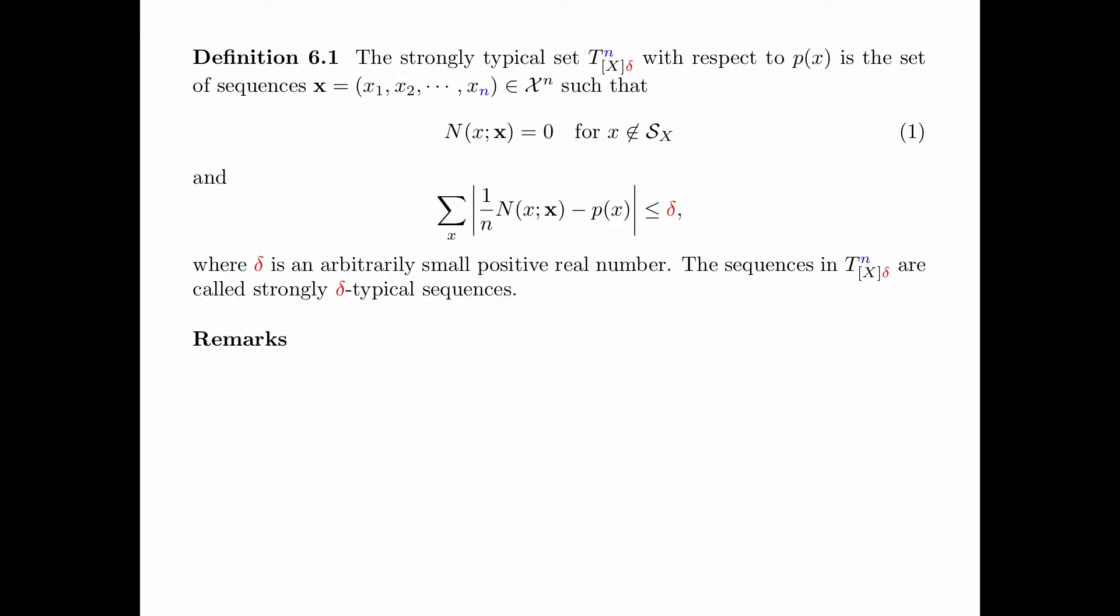In the strongly typical set to be defined, there are two parameters: N, a positive integer, and delta, a small positive quantity. The strongly typical set T^δ_{X,n} with respect to the generic distribution p(x) is the set of sequences of length n such that the number of occurrences of x is equal to 0 for all x not in the support, and ∑_x |1/n N(x;x̄) - p(x)| ≤ δ. The sequences in a typical set are called strongly δ-typical sequences.